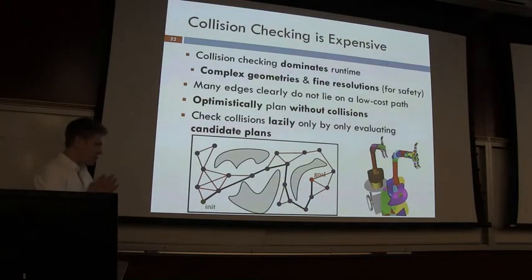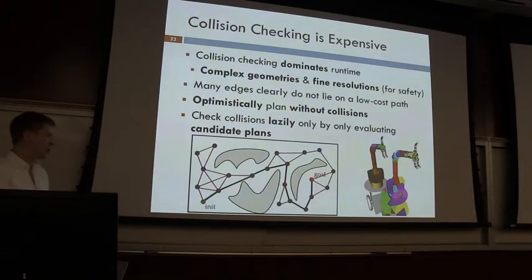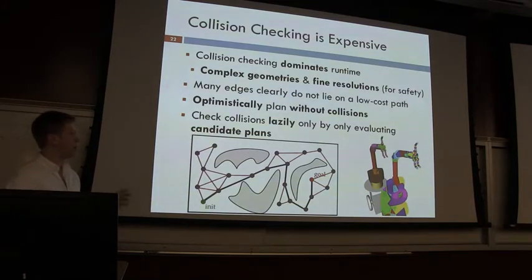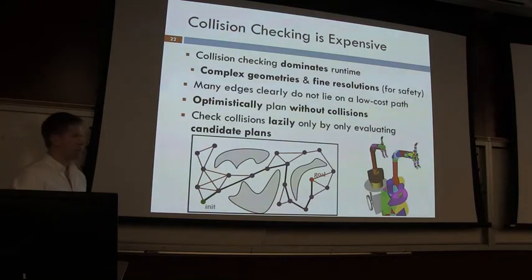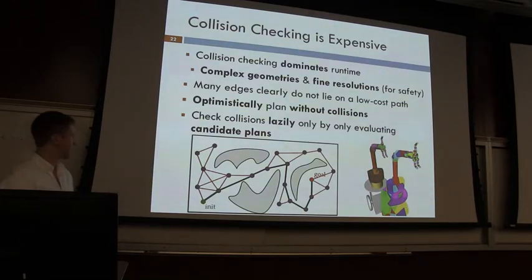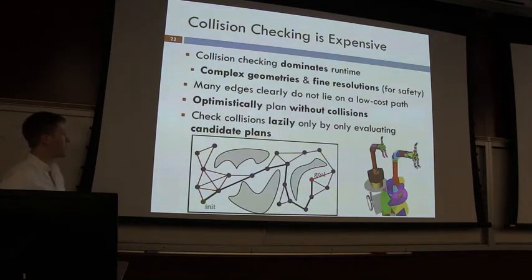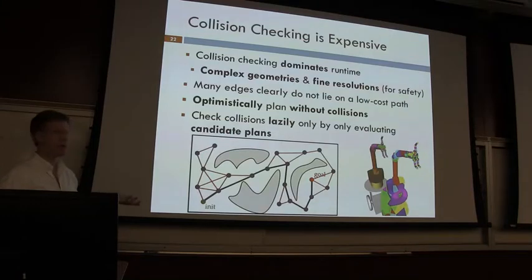The most expensive operation in this process is collision checking. Robots are complicated — consider an arm on a Segway base decomposed into convex parts, requiring checking all those parts against all entities in a kitchen environment. To ensure safe motions in the real world, very fine resolution is needed to check each segment. Building a roadmap with many edges can take 10 to 20 seconds, which is too expensive for a single motion plan. This motivates lazy motion planning.